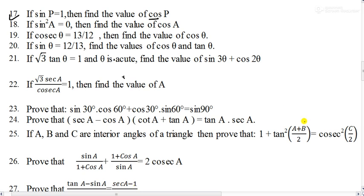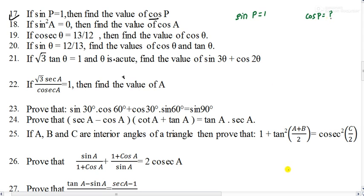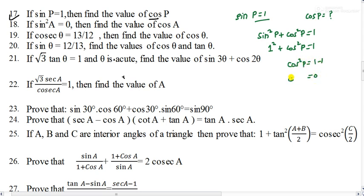I have muted you all, so let us start. Question number 17: sin P is equal to 1. What is the value of cos P? There are different ways to solve this. I will use the identity: sin²P + cos²P = 1. Here sin P is 1, so I write 1² + cos²P = 1. So cos²P = 1 − 1 = 0, which means cos P = 0.